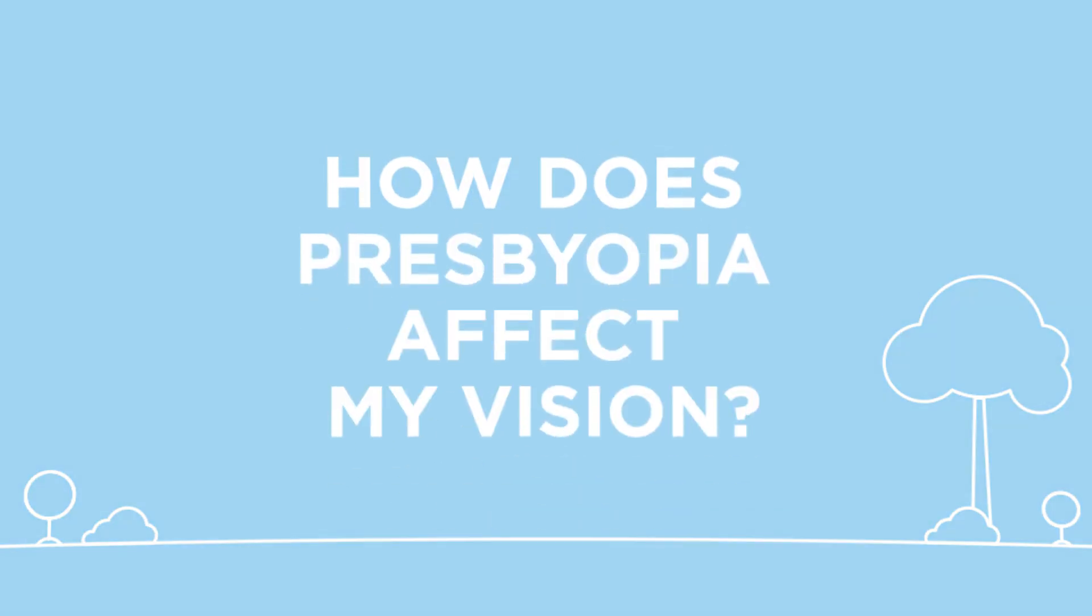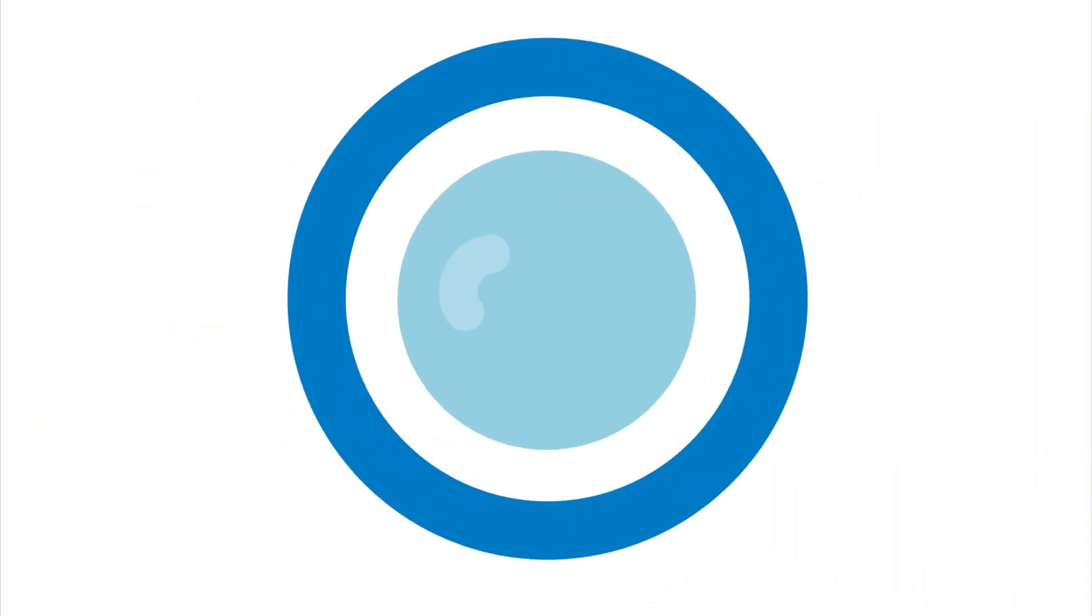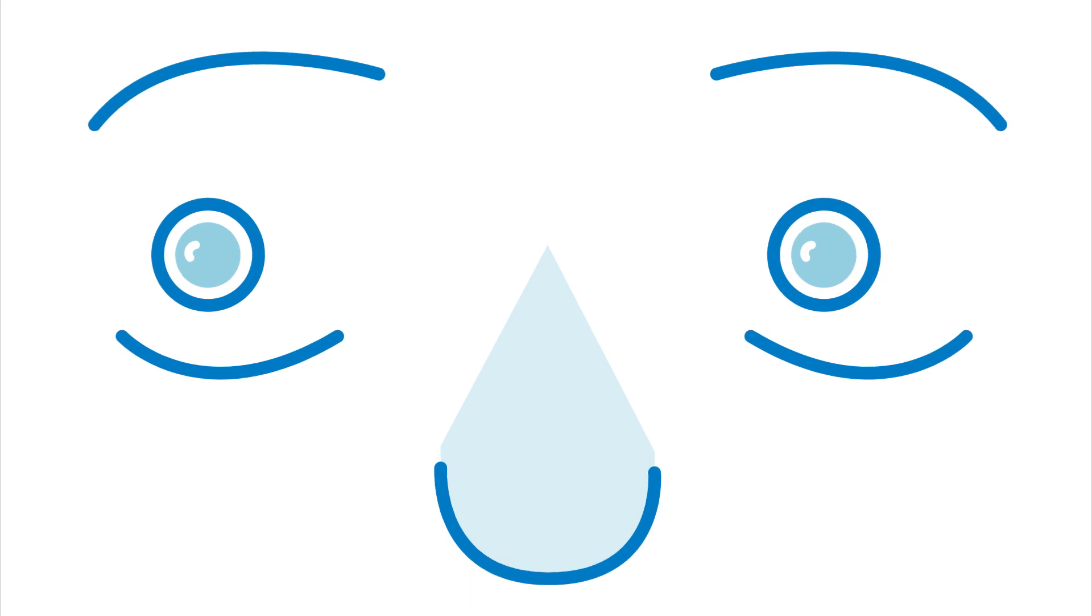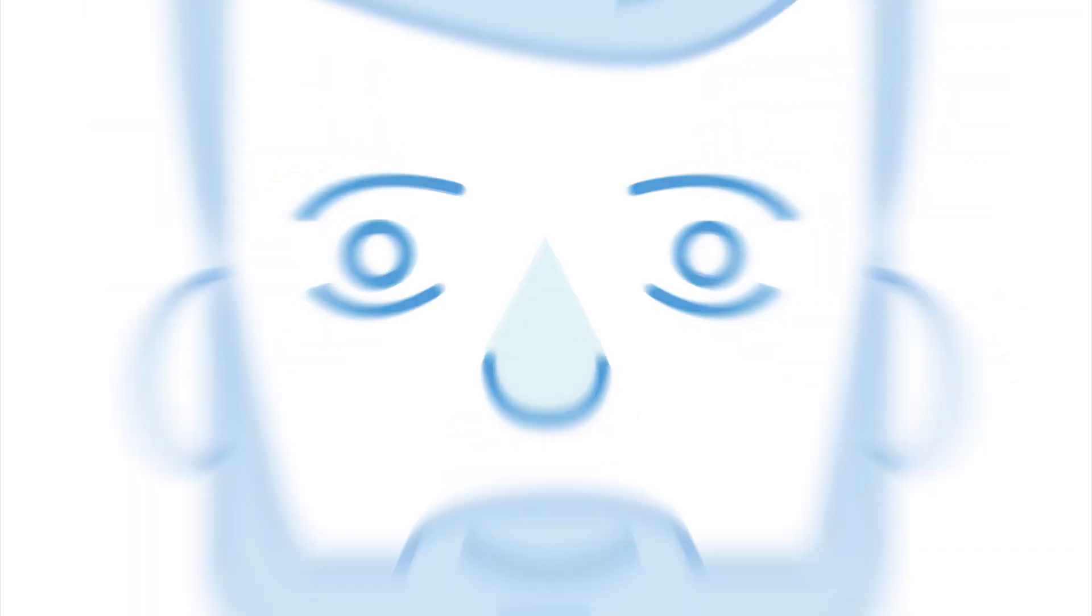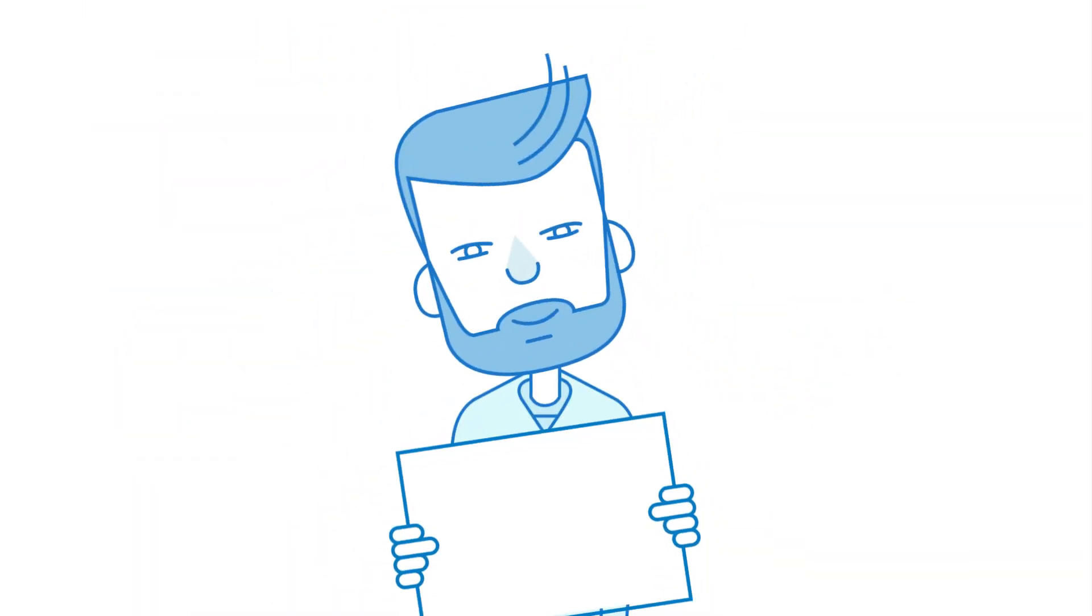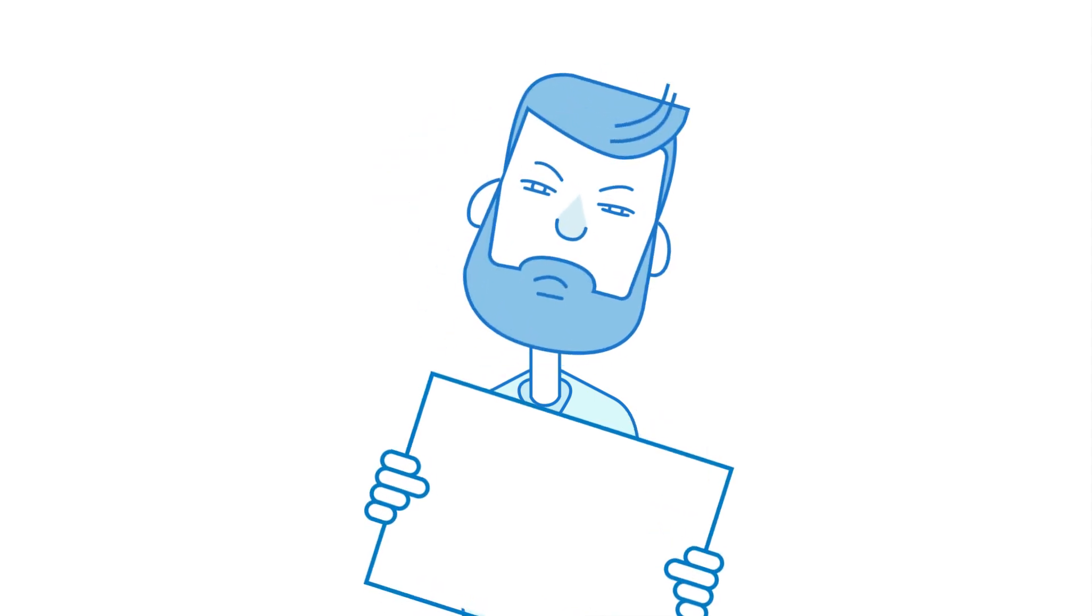How does presbyopia affect my vision? Presbyopia is a common eye condition that affects all of us sooner or later. The eye's lens hardens over time, making it increasingly difficult for the eye to focus when looking at close objects.